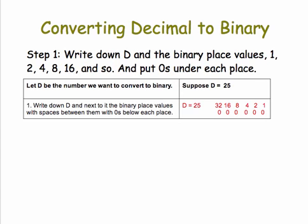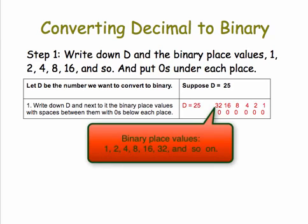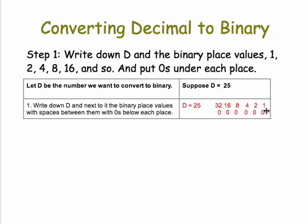Step one: write down D, and next to it, write down the place values — 1, 2, 4, 8, 16, and so on — and place zeros under each place value.